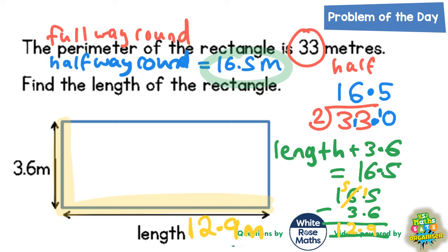Just to double-check that, we could add up all four sides of the rectangle and see if it comes to 33. Well, if one of the widths is 3.6, then the other width on the other side is 3.6. And if the length along the bottom is 12.9, then it would be also 12.9 along the top. Now, if we add those numbers together and see what we get, let's hope that we get 33. So 12.9, add 12.9, add 3.6, add 3.6. Let's see what we get.